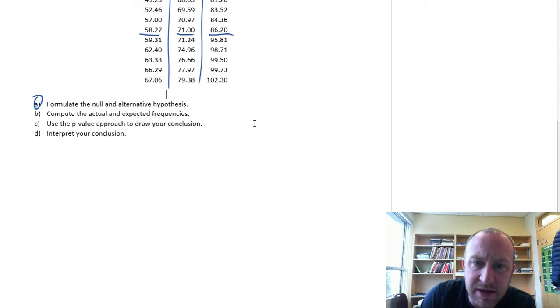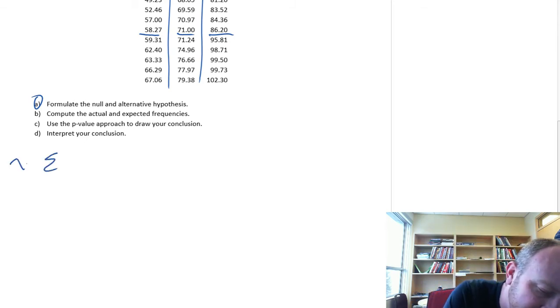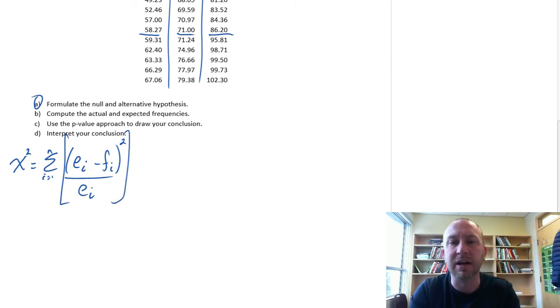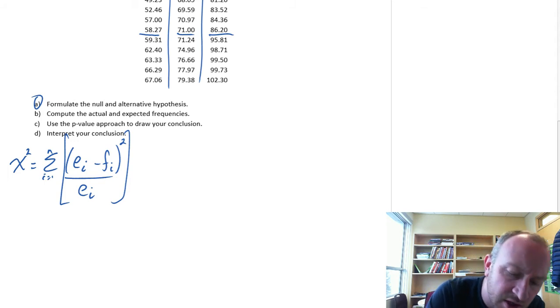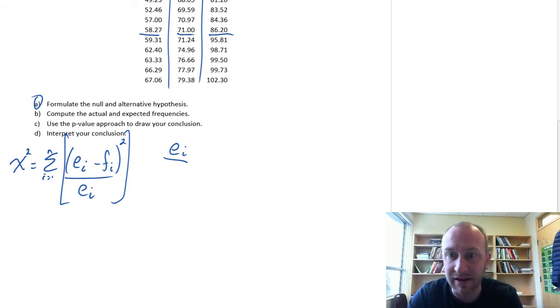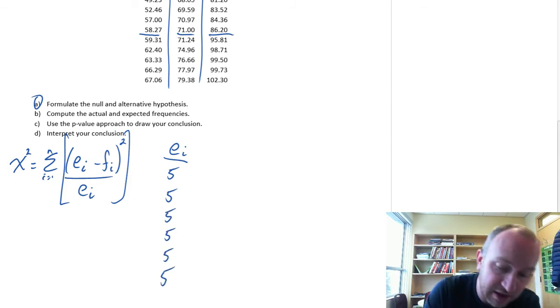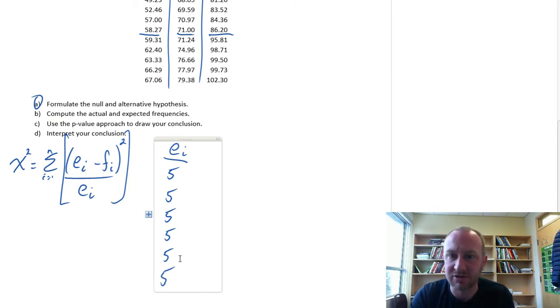Now, the next part of this is the long, tedious part of these problems: compute the actual and expected frequencies. We need to set this up so that we have a minimum expected frequency of five. With 30 employees, I need to have a minimum of five observations in each probability interval. So I can just split this up into six categories. If I take 30 divided by six, I get five observations in each of those six categories.